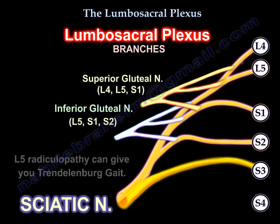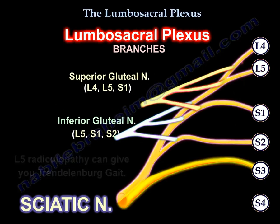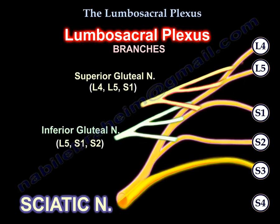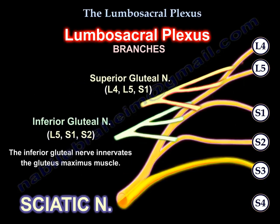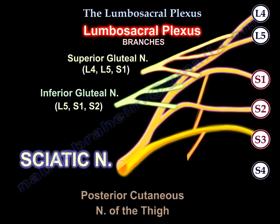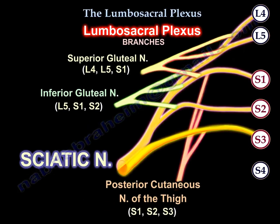L5 can give you Trendelenburg gait. The superior gluteal nerve supplies the gluteus medius, gluteus minimus, and the tensor fasciae latae. The inferior gluteal nerve supplies the gluteus maximus. Going one nerve lower, the posterior cutaneous nerve of the thigh arises from S1, S2, and S3.